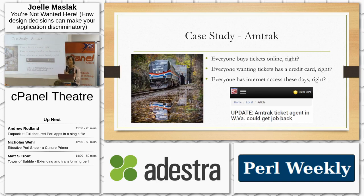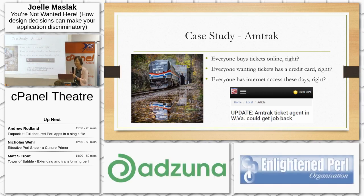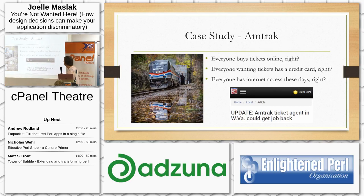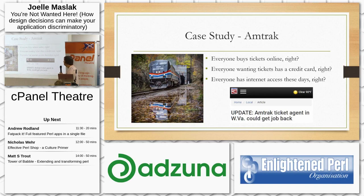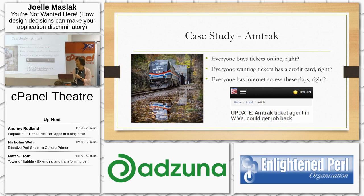A case study on the financial side is Amtrak, the US national railroad. They probably looked at their data and said 98% of ticket purchases are online — let's save money and get rid of ticket agents; everyone has a credit card. The West Virginia Congressional Delegation pushed back, saying you're excluding a lot of people who buy tickets with cash in person. The short of it is they hired their ticket agents back, and probably didn't save any money in the process.